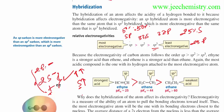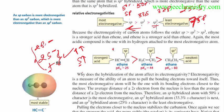So sp has 50% s-character and 50% p-character; sp2 has 33% s-character and 33% p-character; sp3 has 25% s-character and 75% p-character. S-character decreases in the order sp → sp2 → sp3, and s-character increases in the reverse order. That's why sp is more acidic than sp2, which is more acidic than sp3. The hydrogen attached to an sp-hybridized carbon will be more acidic — more stable conjugate base — than those attached to sp2 or sp3 carbons.